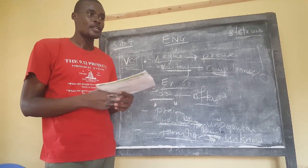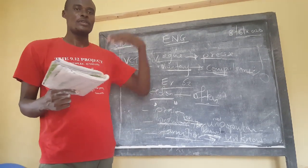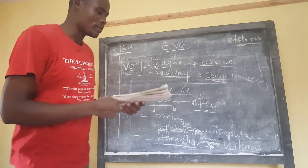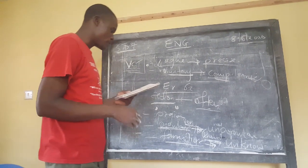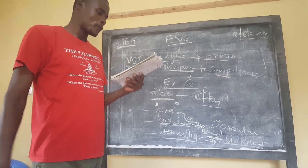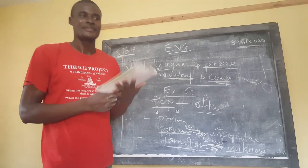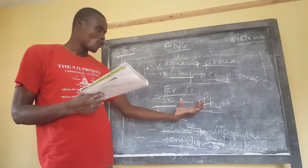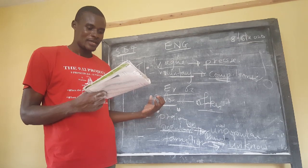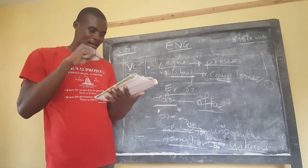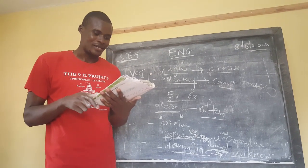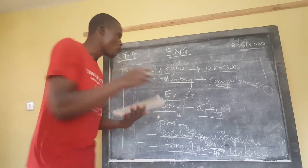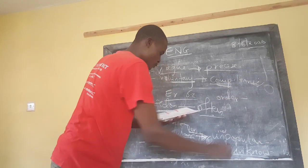Then we have 'guilty' — when somebody is guilty, the opposite is 'innocent'. Then 'professional' — a doctor is a professional who is allowed to treat people. The opposite could be a 'quack', somebody doing something without any knowledge. Then the word 'order' — when there is order in a place, the opposite of order will be 'chaos'. When people are fighting and there is no order, like after some elections in Kenya, people are in chaos.